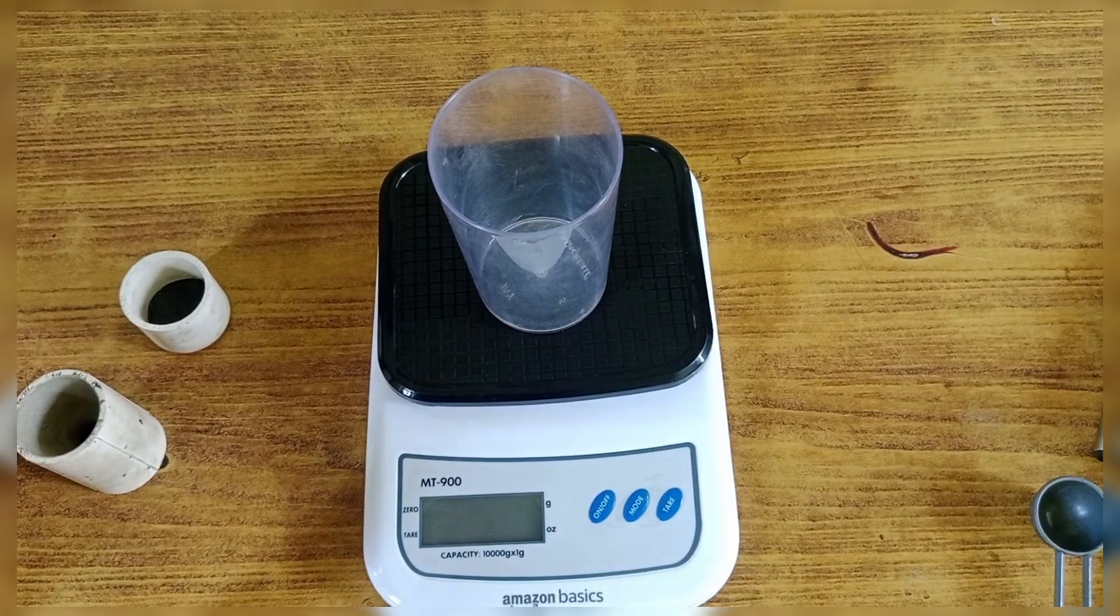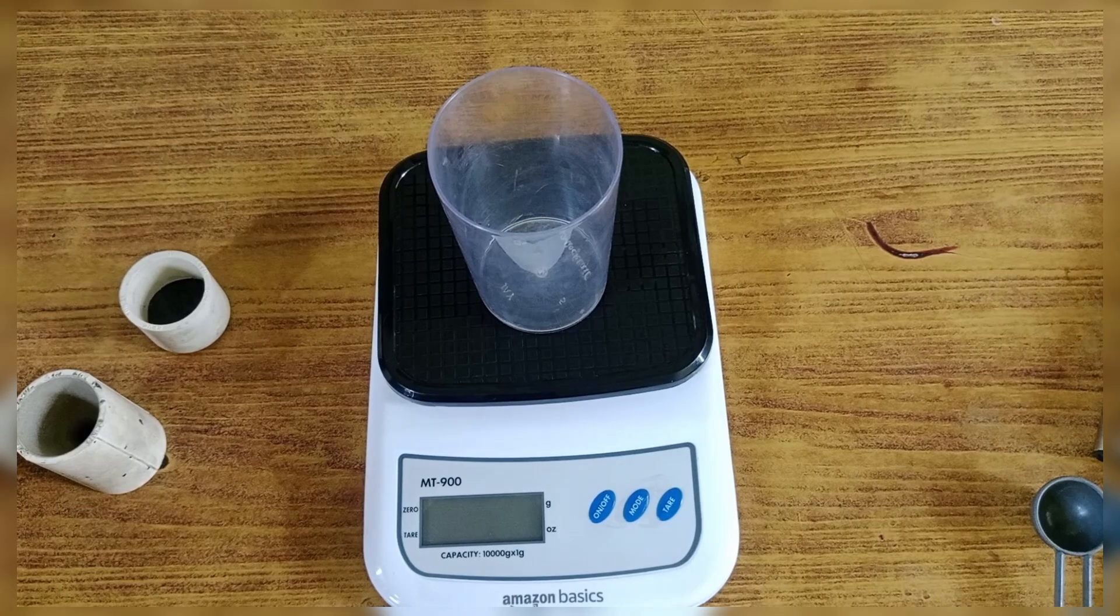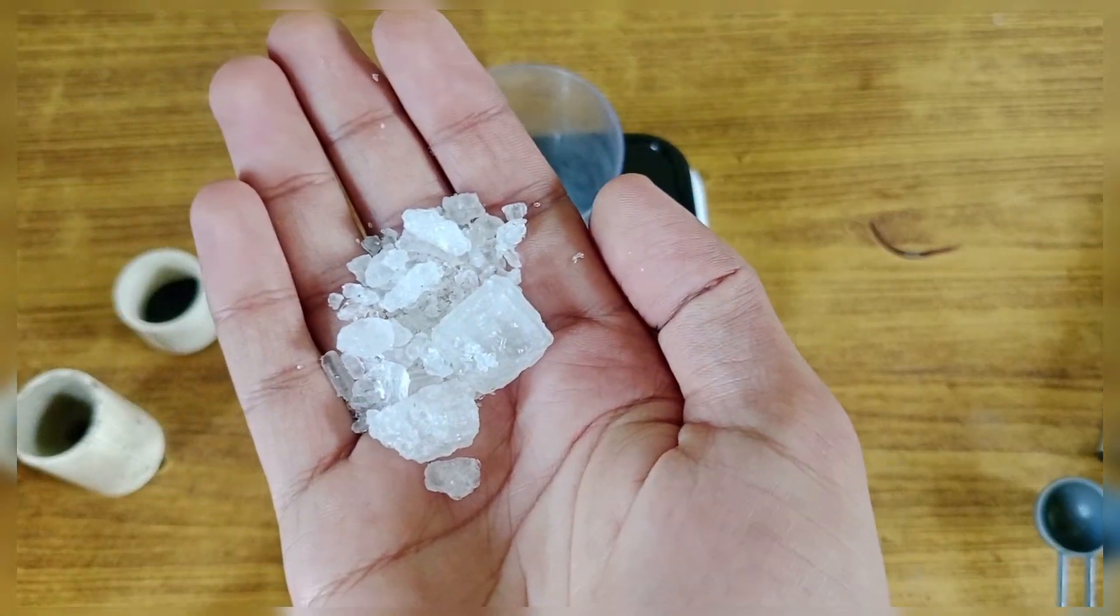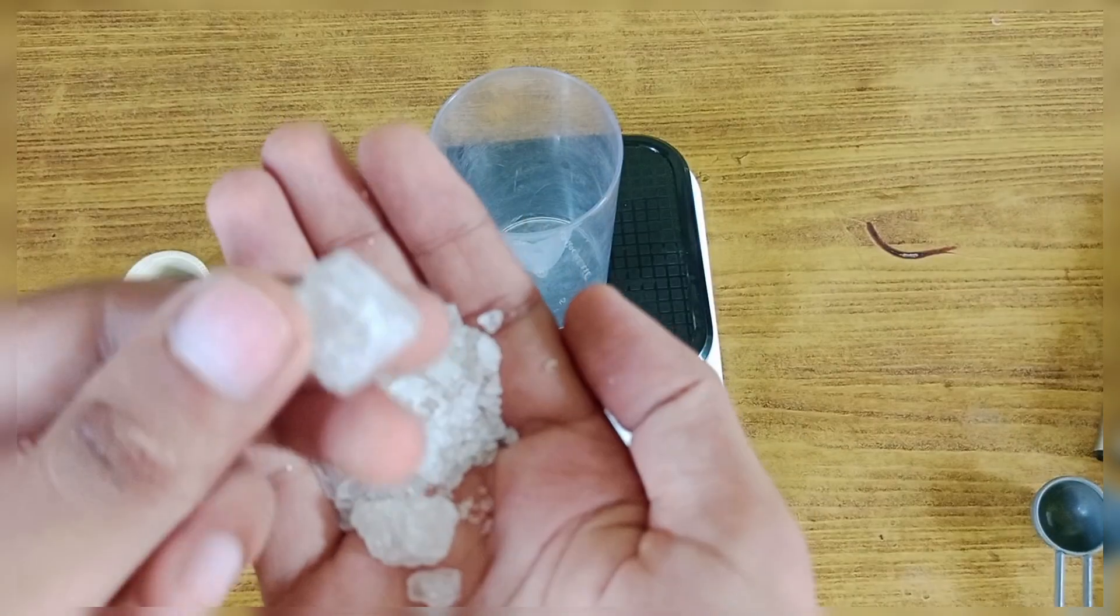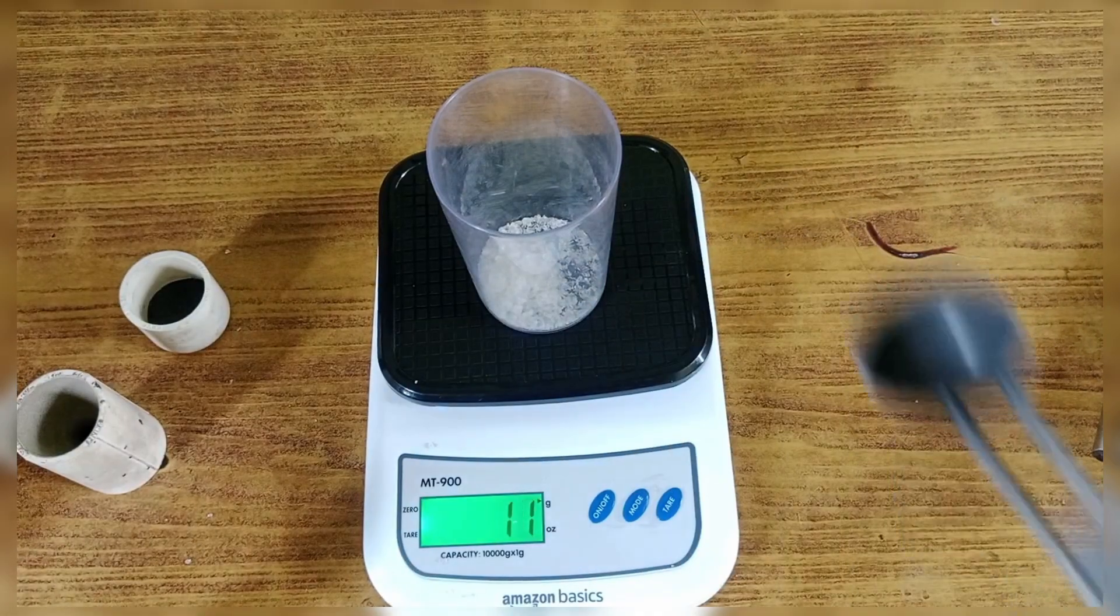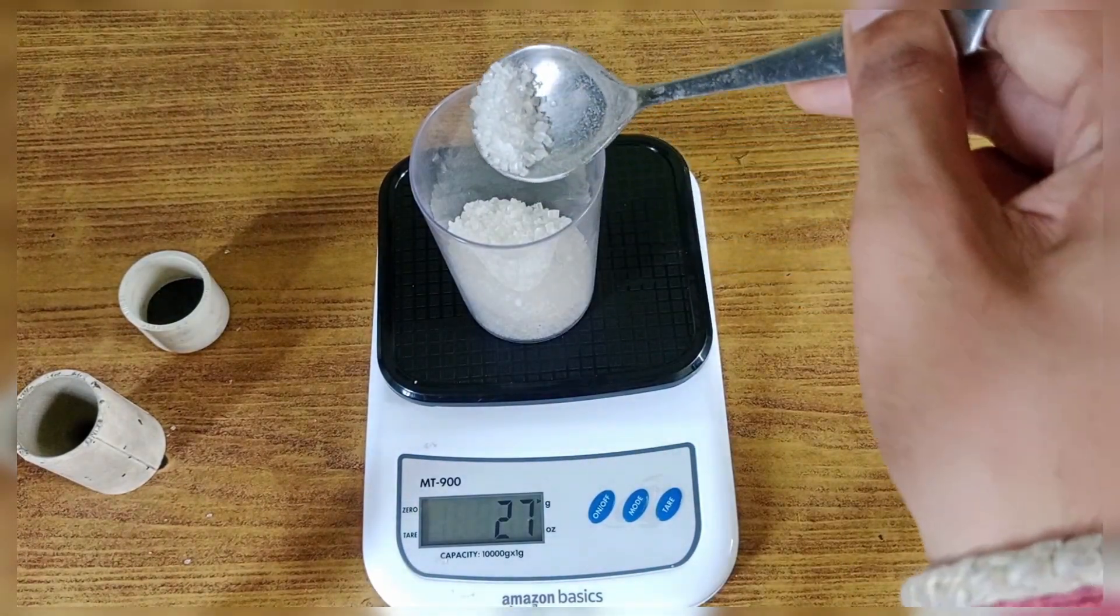At first, I decided to use the most common mixture for rocket candy: 65% potassium nitrate and 35% sugar. The potassium nitrate I had was in crystal form. I thought about grinding it, but I was hoping it would melt easily during cooking. So I left it as it was. I measured both ingredients on a kitchen scale and mixed them together to make a 100 gram batch.